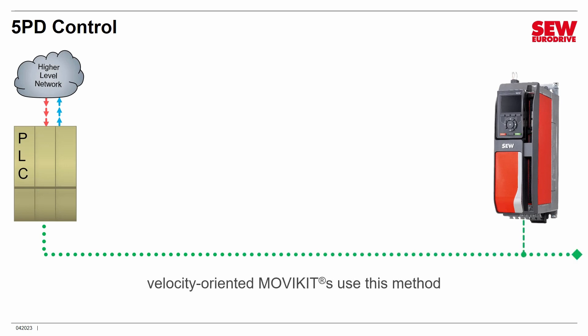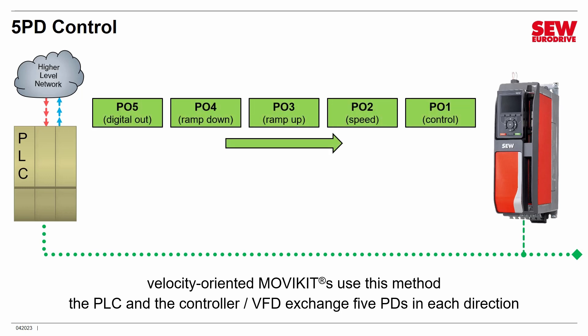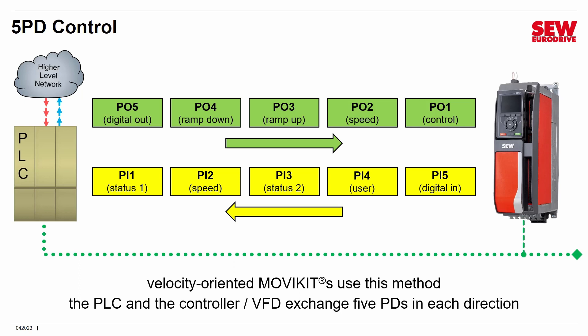SEW describes field bus control by how many process data words the PLC exchanges with VFDs. A very common type is called 5PD, using five process data words — velocity-oriented MoVC kits use this method. PO1 carries control information, PO2 sends the speed value, PO3 and PO4 are ramp up and down, and PO5 controls digital outputs. The VFD sends back status in PI1 and PI3, current speed in PI2, a user-selected parameter in PI4, and digital input status in PI5.